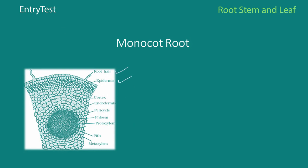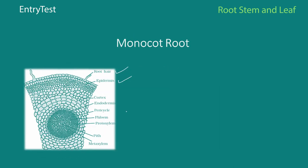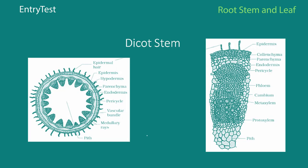Moving on to the monocot root — it's quite similar. It has root hairs, epidermis, cortex, endodermis, pericycle, and phloem. The key difference is with the protoxylem: in a dicot there are only about four bundles, but in a monocot root the protoxylem usually has six or more bundles, making it polyarch in nature. The pith is also larger and more well-developed, and there is metaxylem as well.